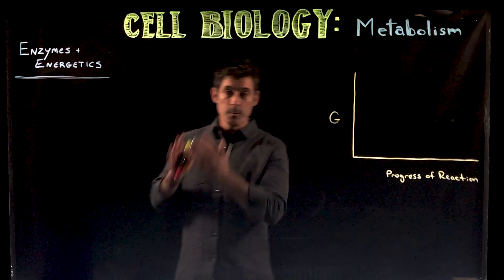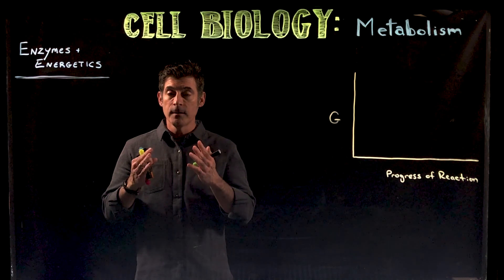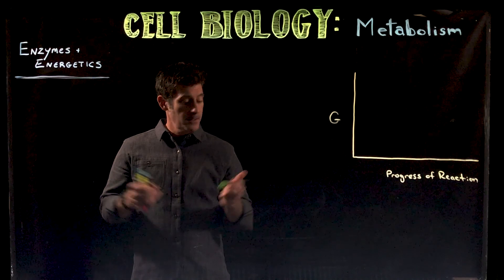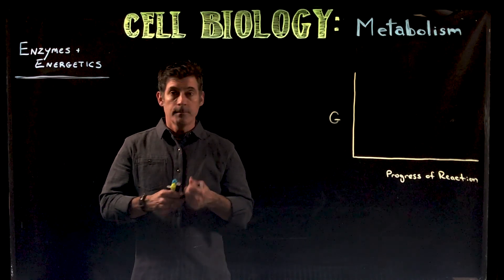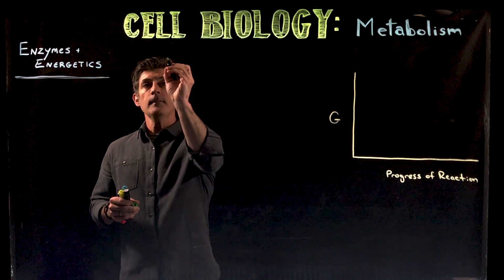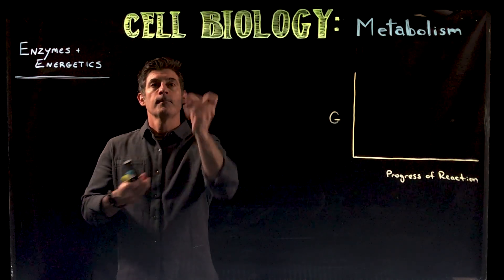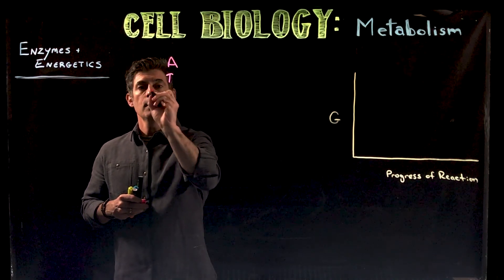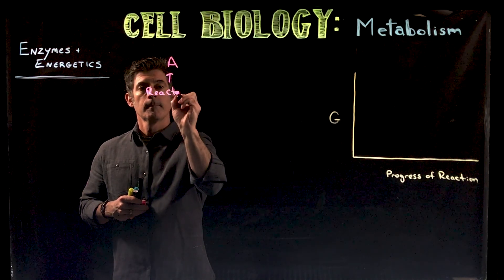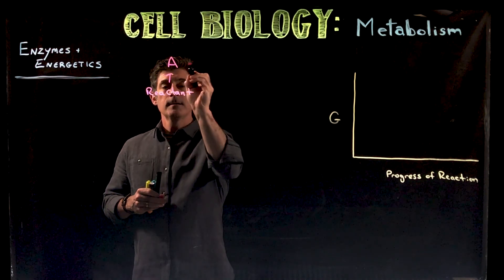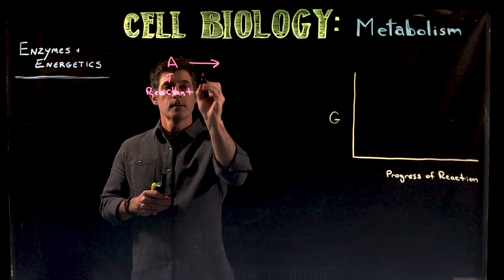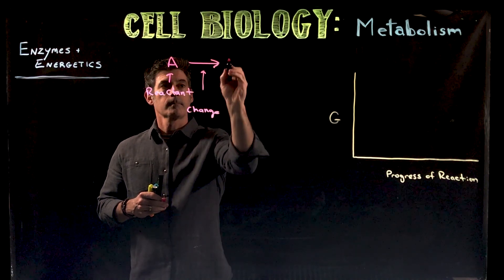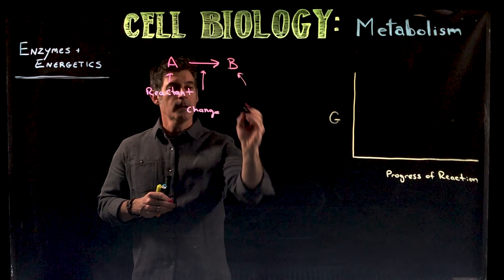Then we start to look at specific chemical reactions - glycolysis, pyruvate oxidation, and the citric acid cycle. But this is the starting point. In cells we have chemical reactions starting with some initial molecule, a reactant molecule, and that reactant is changed in some way.